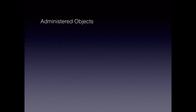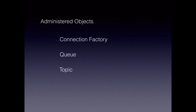Finally, there are administered objects. The queues, topics, and the connection factory — all these in the messaging world are called administered objects because we create them at deployment time. When we deploy our J2EE application or any application, we create the connection factory, the queue, and the topic, either manually — which is rare — or, usually, as part of our build scripts.